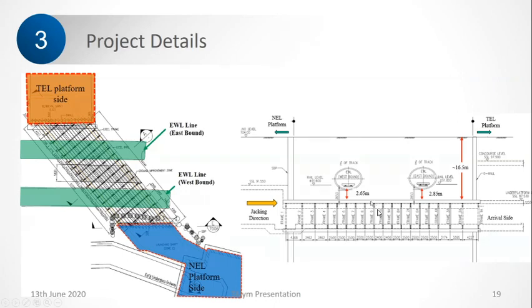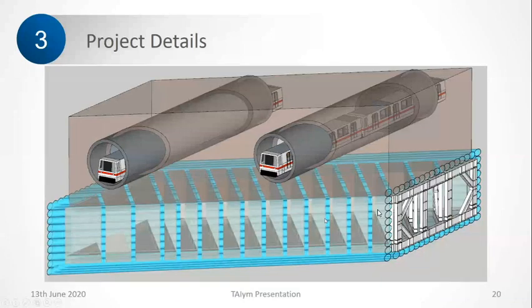The scheme adopted here was the pipe roof with steel frames. This is the top pipe roof, jacked from here to here all the way, acting like a roof support. Once all the pipe roofs are installed, we excavate and install the frames as we go. This gives a better visualization: these are the two tunnels running which must remain operational, and we are excavating below. These are the pipe proofs installed.